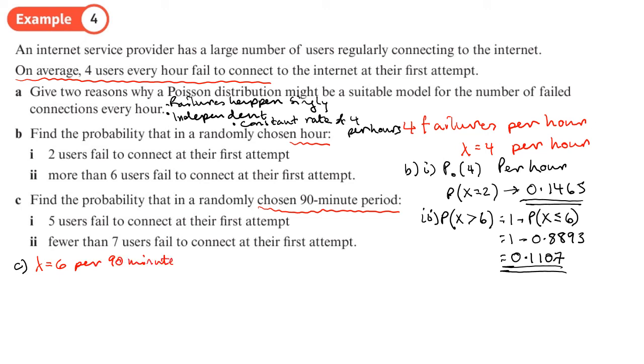So lambda equals six and this is per 90 minutes. Yeah, so now we're going to use lambda equals six. So first part of the question, Poisson distribution with lambda equals six. So we expect six failures in 90 minutes. So notice how we can scale this, we can scale this up and scale it down if we need to. The probability that exactly five users failed to connect.